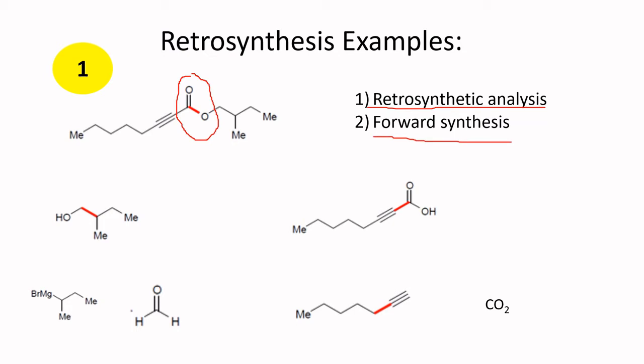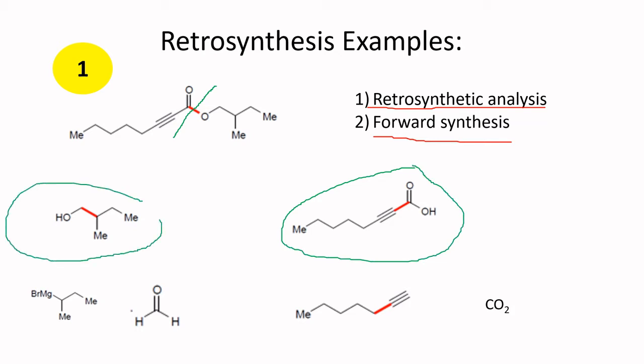When we have this compound, what we need to do is perform some disconnection. In this case we disconnect at the functional group, and what we get is these two parts — the synthetic equivalents from the disconnection.